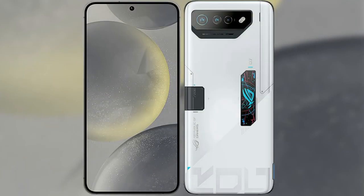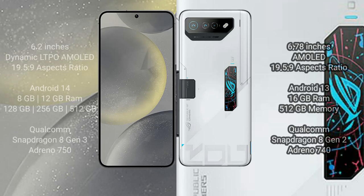I will compare the new Samsung Galaxy S24 with the ASUS ROG Phone 7 Ultimate. The Samsung Galaxy S24 comes with a 6.2-inch Dynamic LTPO AMOLED display and a 1080x2340 resolution. The ASUS ROG Phone 7 Ultimate comes with a 6.78-inch AMOLED display and the same 1080x2340 resolution.